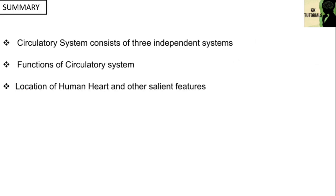Here comes the summary of this video. We have discussed the importance of circulatory system, which is also called cardiovascular system. It permits circulation of blood and transport of nutrients. It helps in fighting diseases, stabilizing temperature and pH. We have also discussed location of human heart.